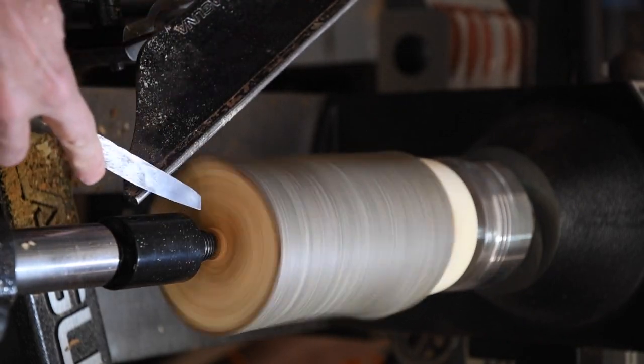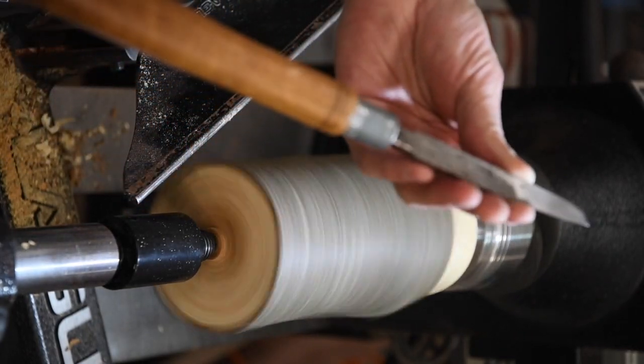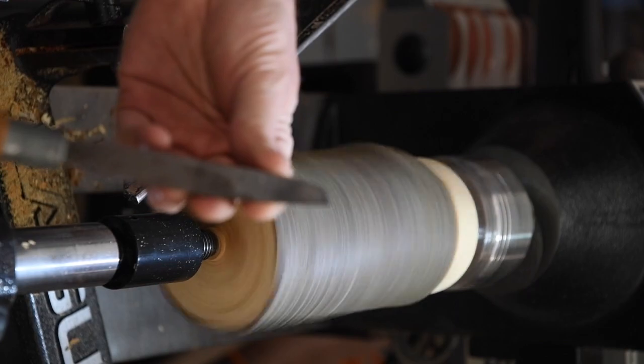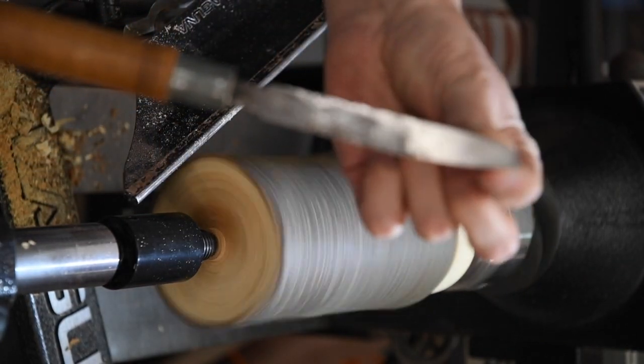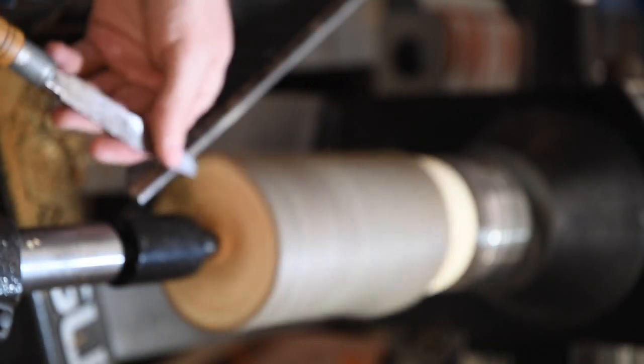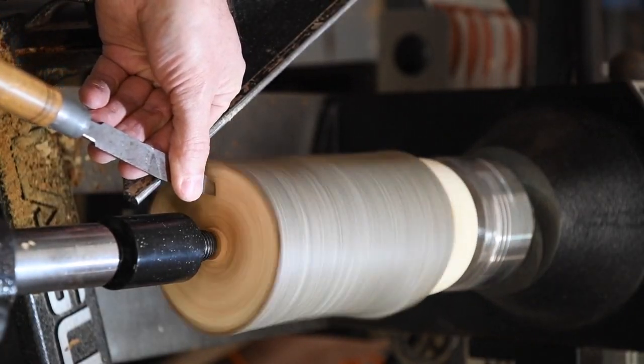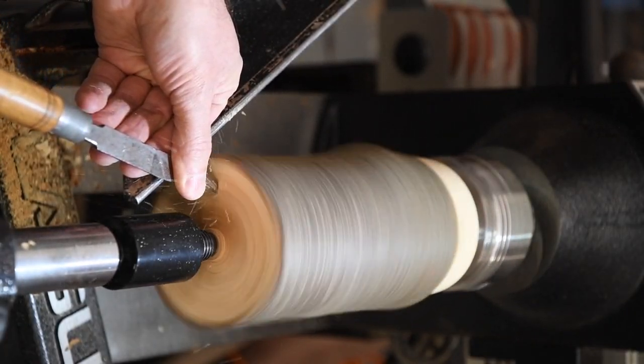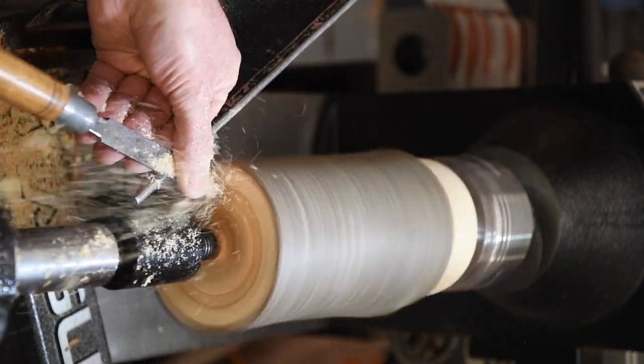Now to cut the tenon inside the bottom, I'm going to use a tool that has a specialty grind on it. This corner here will cut a perfect dovetail and allow me to leave some wood on the outside of the bottom.